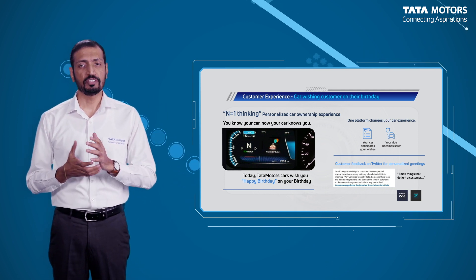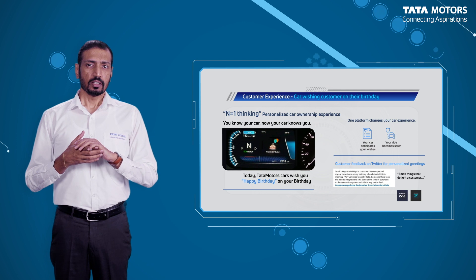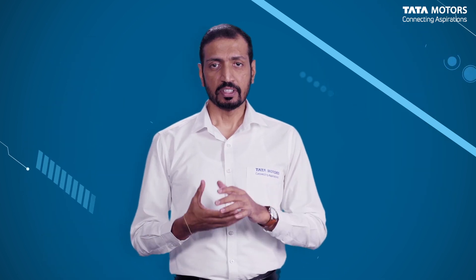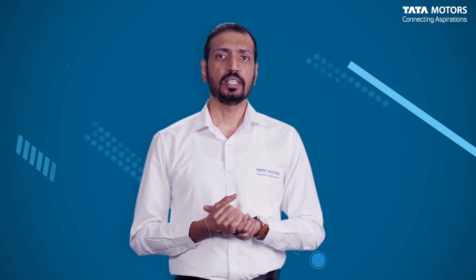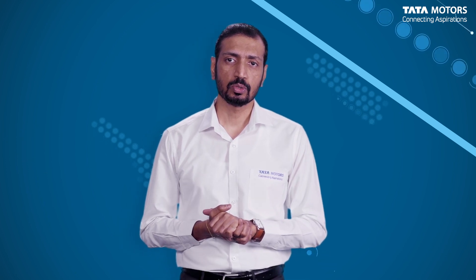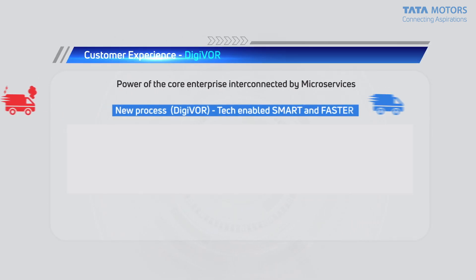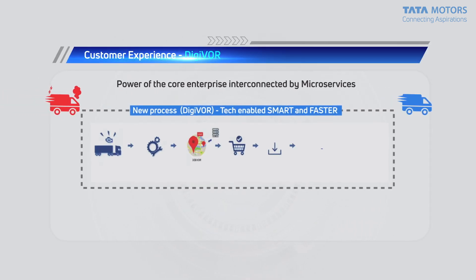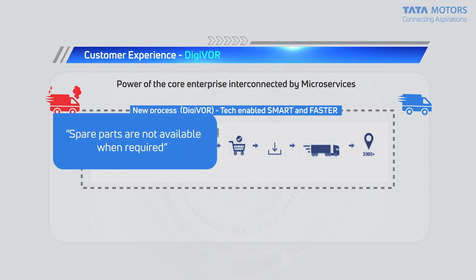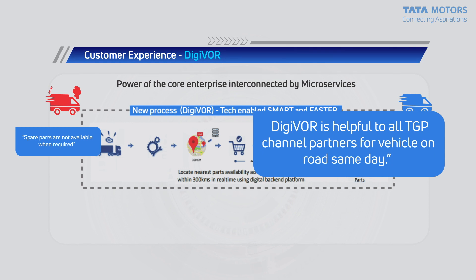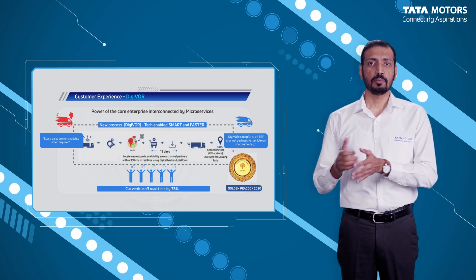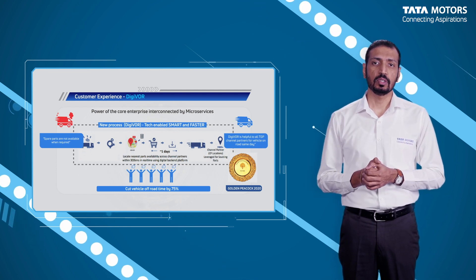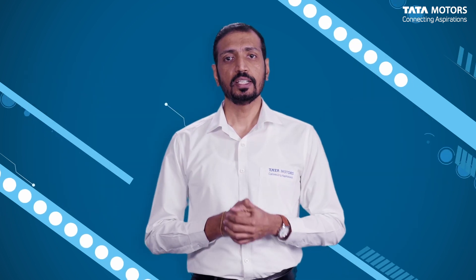We'll go to another example which is more business-based and of a different type of nature. We have a commercial vehicle business that's very large. Our vehicles are used to move goods across the length and breadth of our country, and these vehicles move essential services to our customers. These sometimes break down for various reasons. One of the big challenges when a vehicle breaks down — typically called Vehicle Off-Road or VOR — was getting the right spare to that particular location, wherever the vehicle broke down.